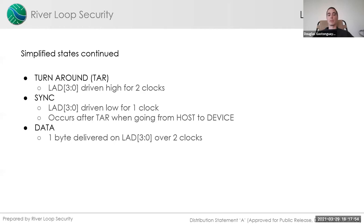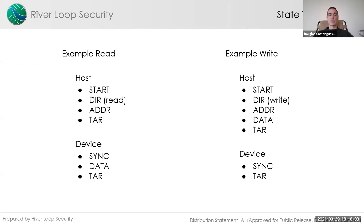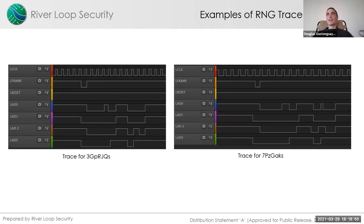Data comes across the data lines as one byte delivered over two clocks. For a read: start, direction read, address, turnaround to transfer control to device, device syncs, gives data, then turnaround back to host to terminate. For a write: start, direction write, address, data being written, turnaround — then the device syncs and turns around to terminate. These are traces that Sue collected from a logic analyzer with the TPM going across, and my job was to figure out how to decode them.